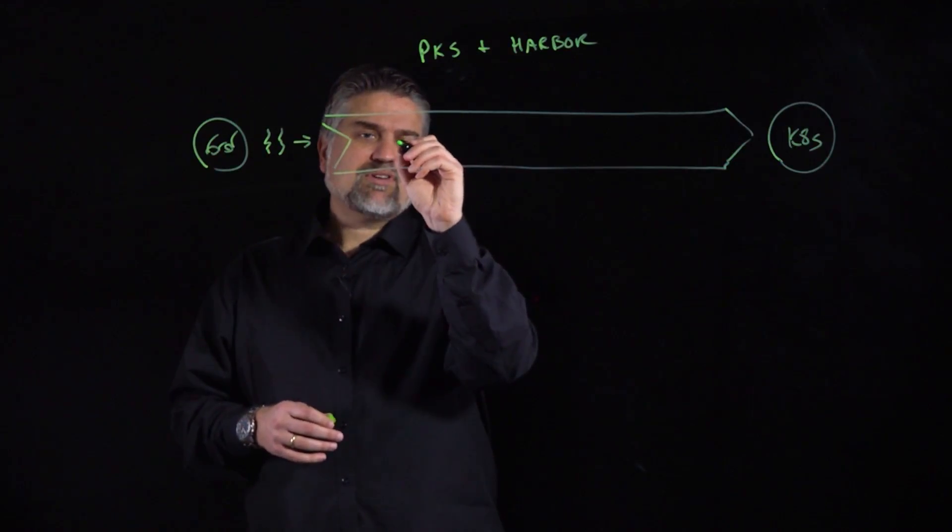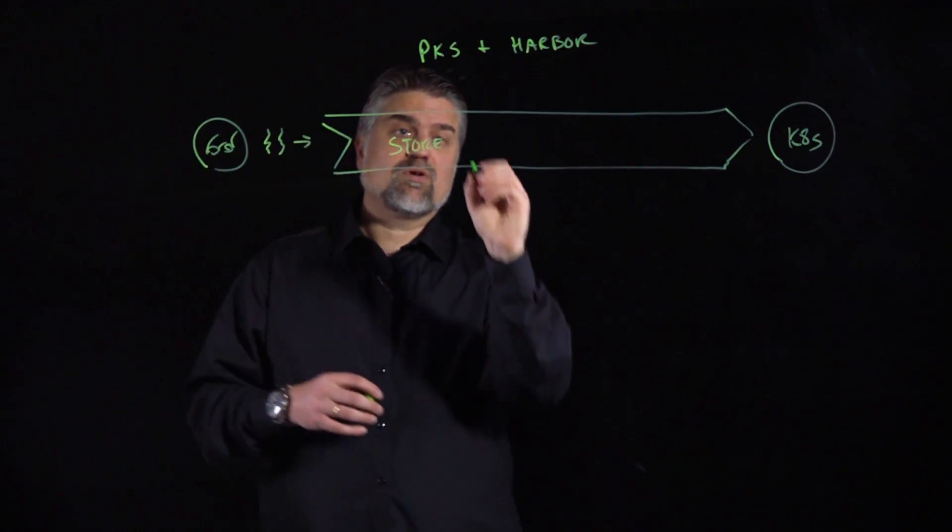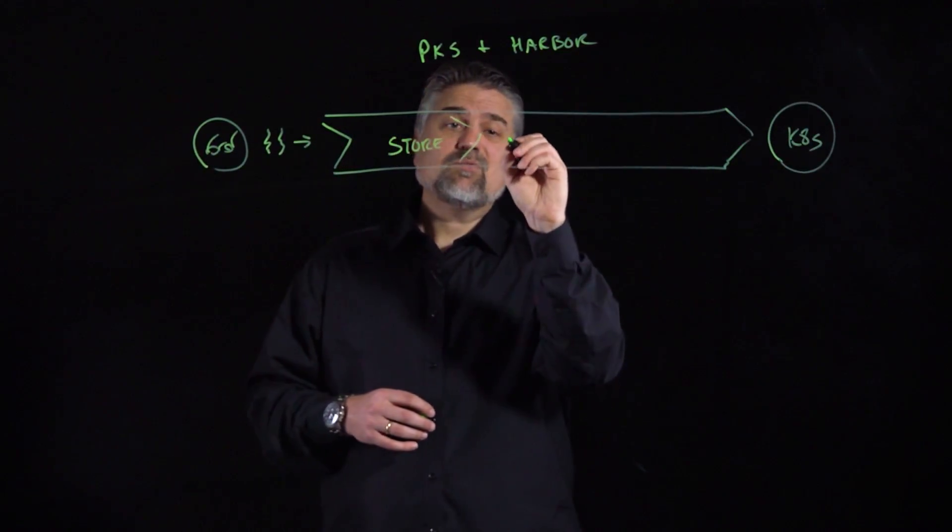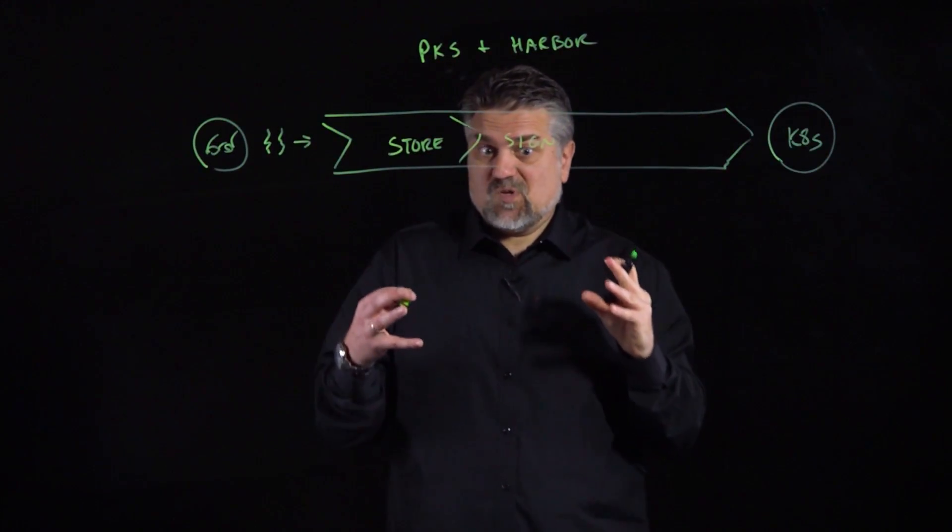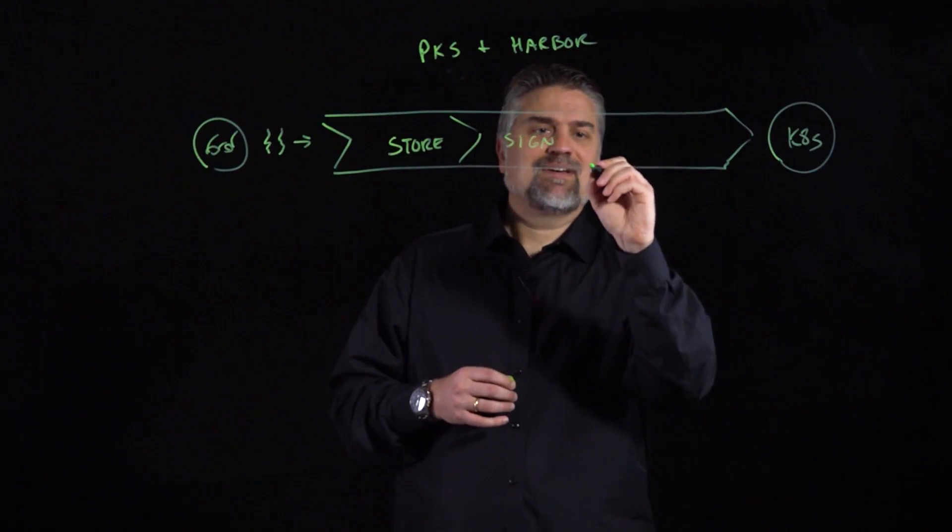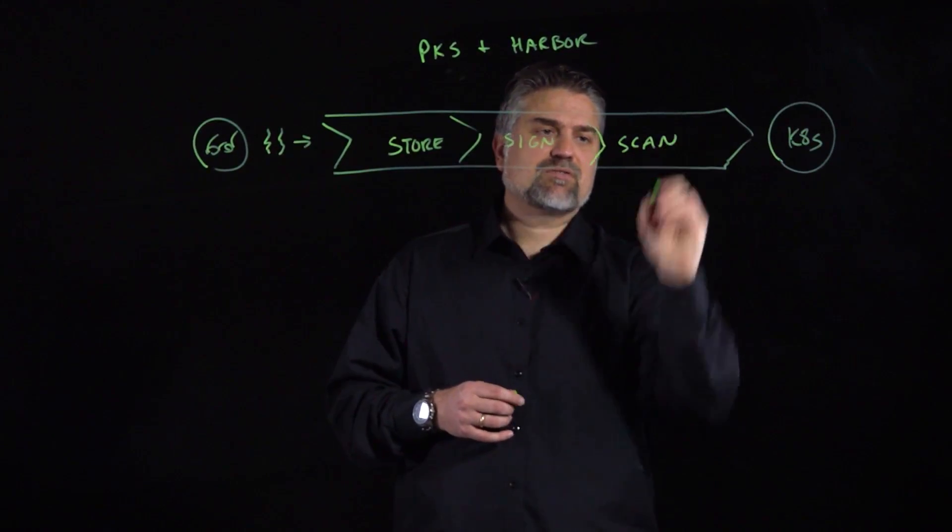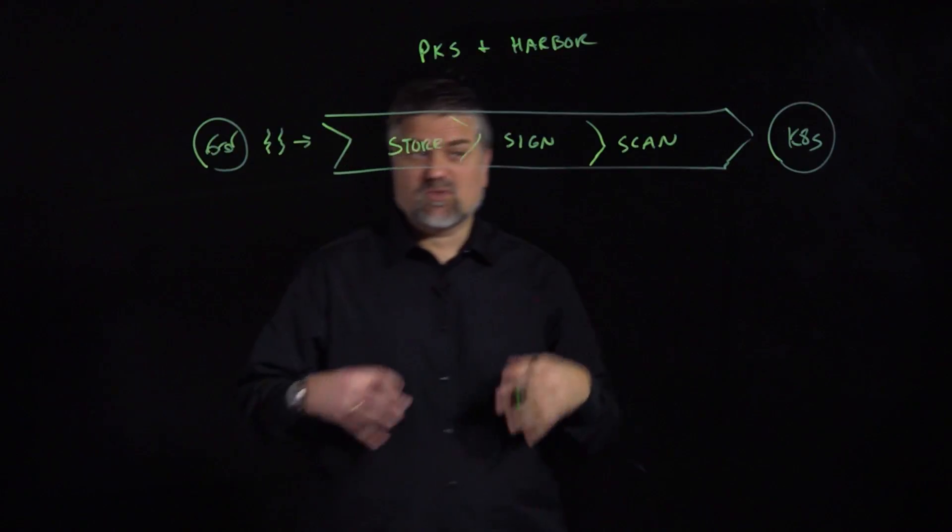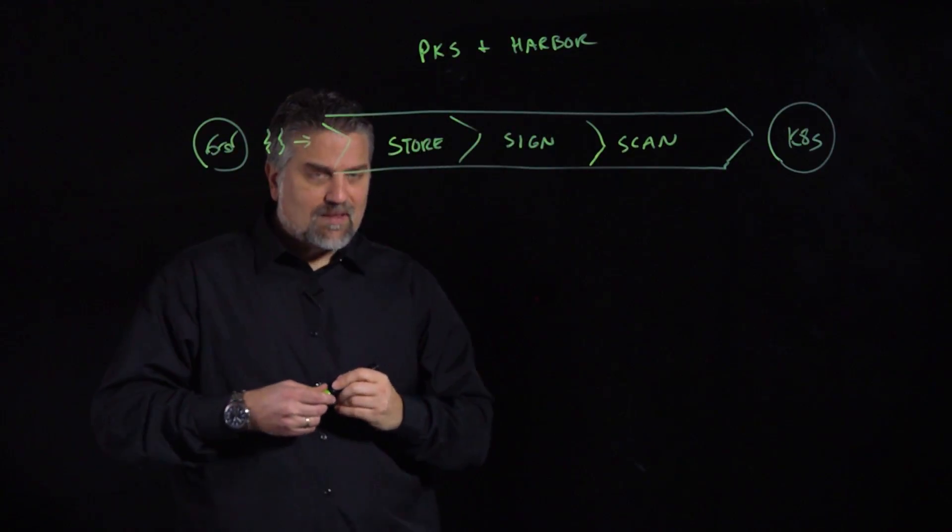Well, we're going to break this up into three stages. First thing we want to do is we're building an image, so we want to store our image. And then we're going to want to sign our image to make sure that our image is coming from where it should be coming from. And lastly, we want to take a look at scanning that image. We want to make sure that there are no CVEs. We didn't build the image with old software or something that's not compliant in our environment.